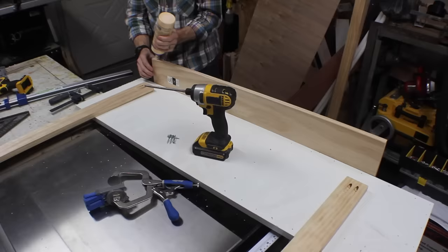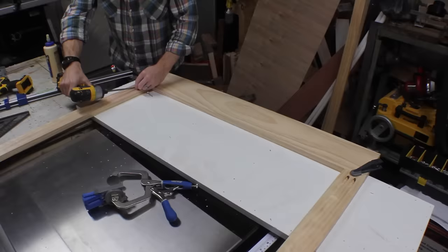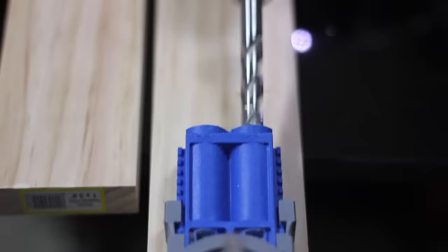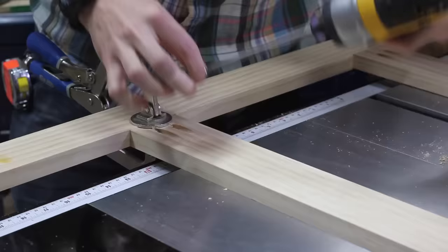I used a taller board on the bottom to match the base trim in the room. Then I cut some more pieces to use for the fronts of the shelves and attached them in the exact same way.